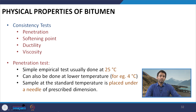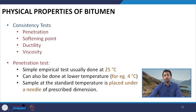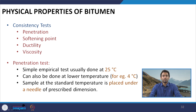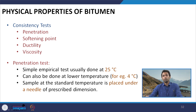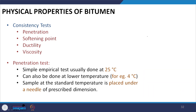Talking about the penetration test, this is a simple empirical test usually done at 25°C. An important point to note is why 25°C was chosen — since this test was developed in the US, they considered 25°C as the average pavement in-service temperature for their locations. Therefore this temperature was chosen to study the consistency property of bitumen at the average pavement temperature.